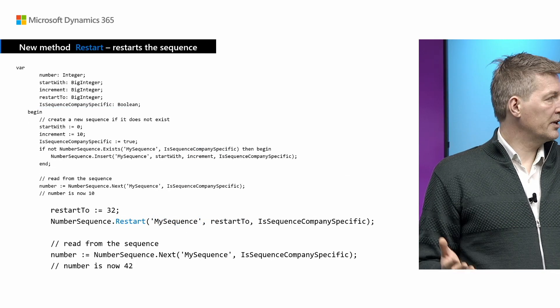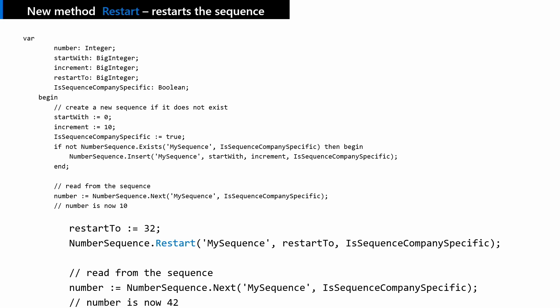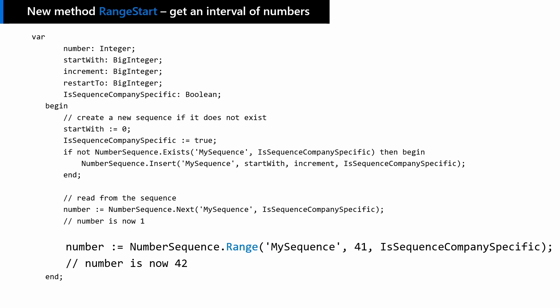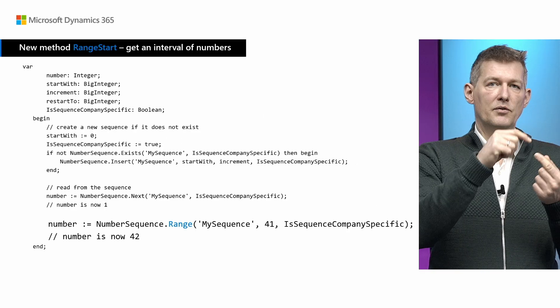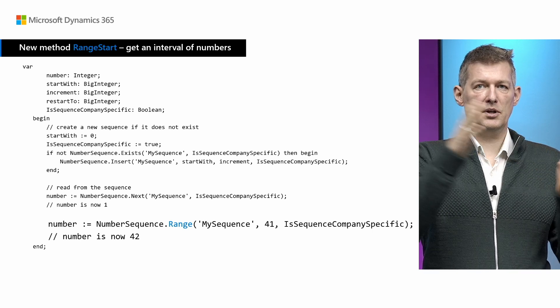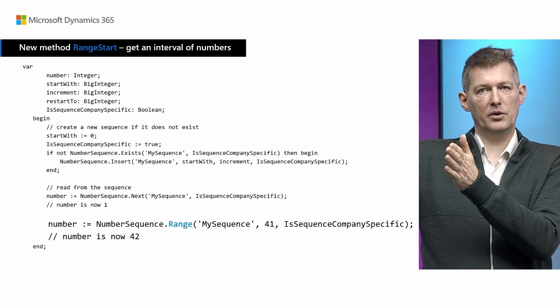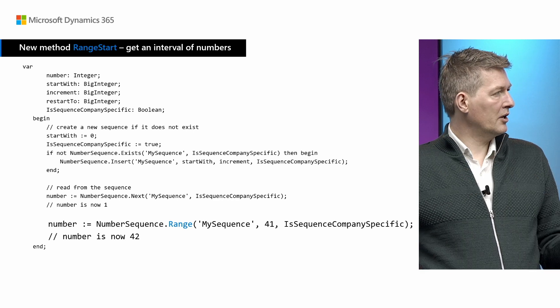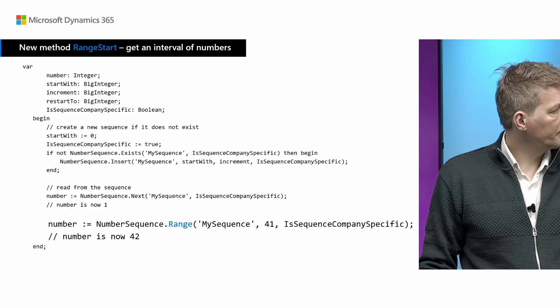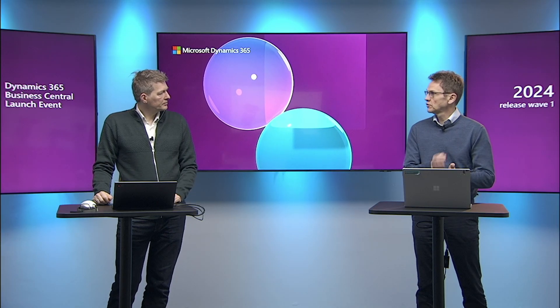For restart, before this you would have to drop the sequence and create a new one. With the new restart method you can simply, as the code example here states, restart to a particular number and then start picking numbers from there. Similarly, range start is a way for you to get an interval of numbers. You can achieve this with a number sequence by incrementing, but now you can simply specify a range and get that range without having to call the database.